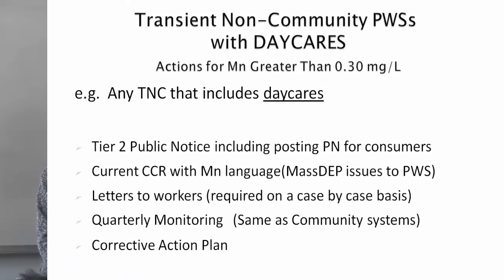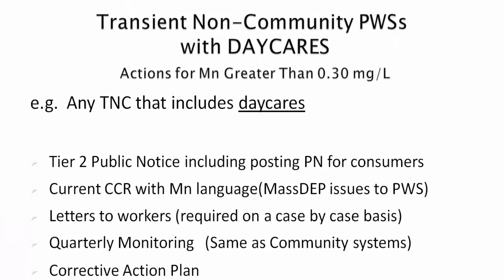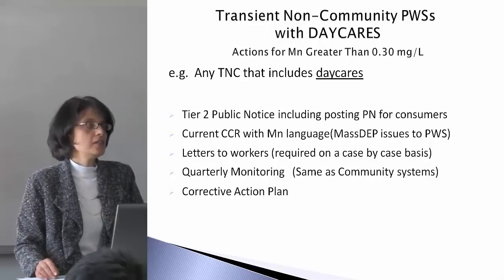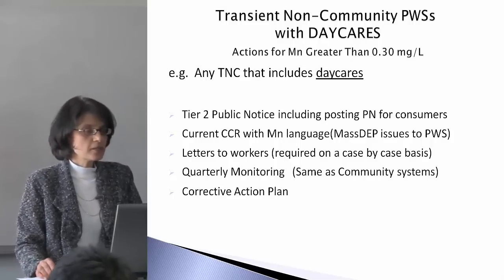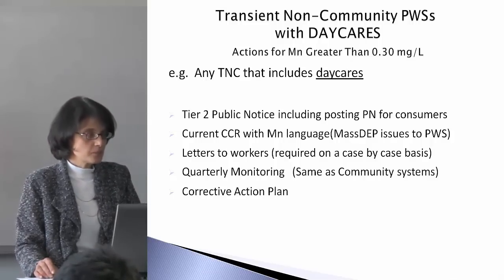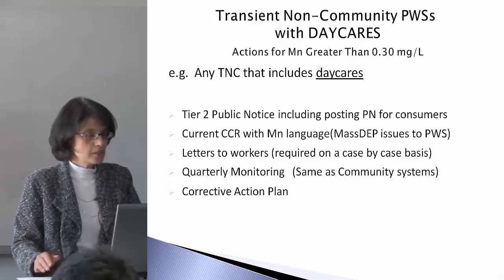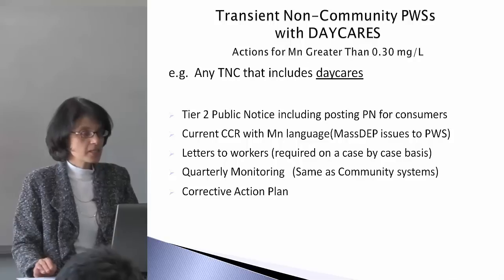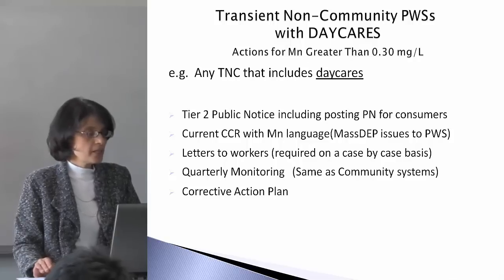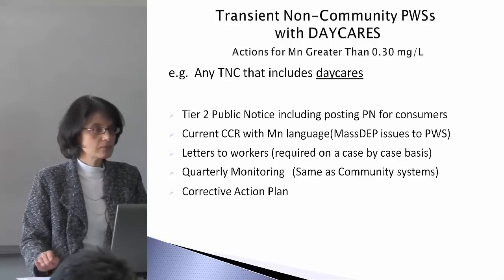There are two types of transient non-community public water supply systems: those with daycares and those without daycares, such as restaurants, gas stations, and campgrounds. For transient systems with daycares, if the manganese in the drinking water is 0.3 mg per liter or more, the same Tier 2 public notice requirements apply: posting of the public notice for consumers, a letter to workers depending on a case-by-case basis, quarterly monitoring, and a corrective action plan.